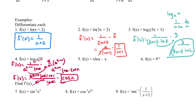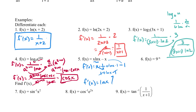Next example uses the product rule. f′(x) equals the first times the derivative of the second, which is 1 over x, plus the second, ln(x), times the derivative of the first, which is just 1, minus the derivative of x, which is also 1. These simplify: 1 plus ln(x) minus 1 — the 1's cancel — so f′(x) equals ln(x).